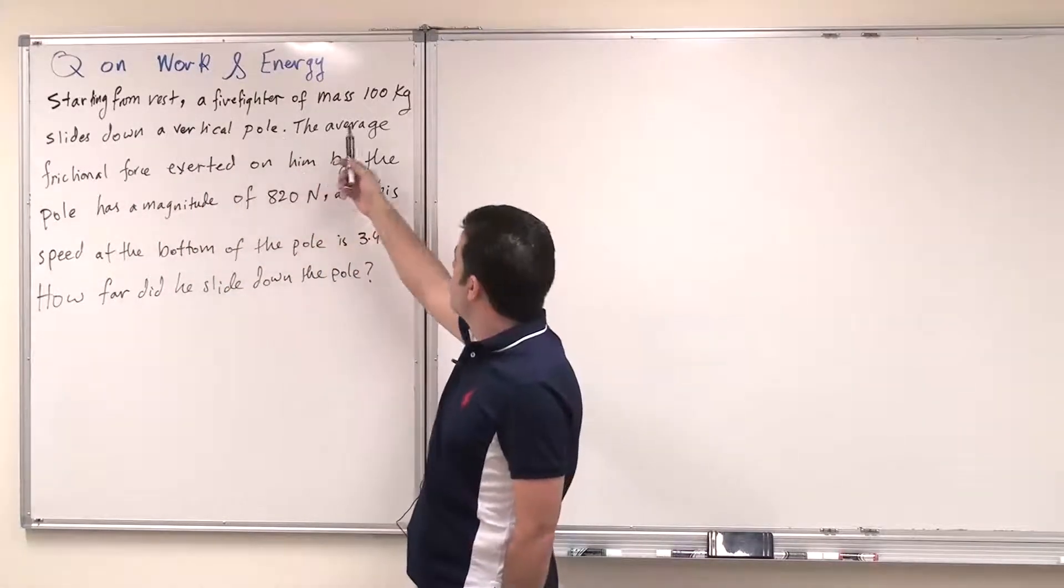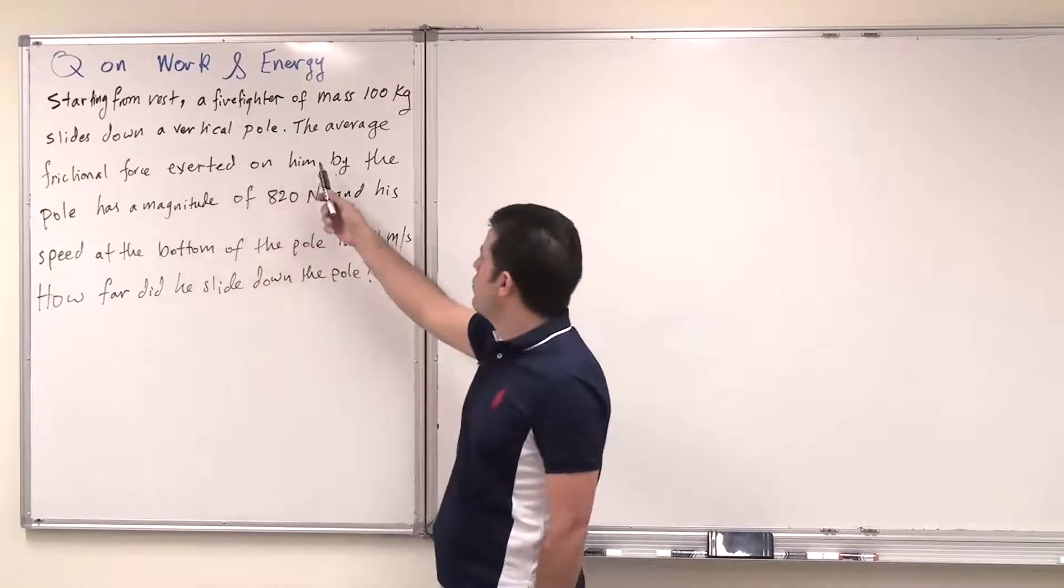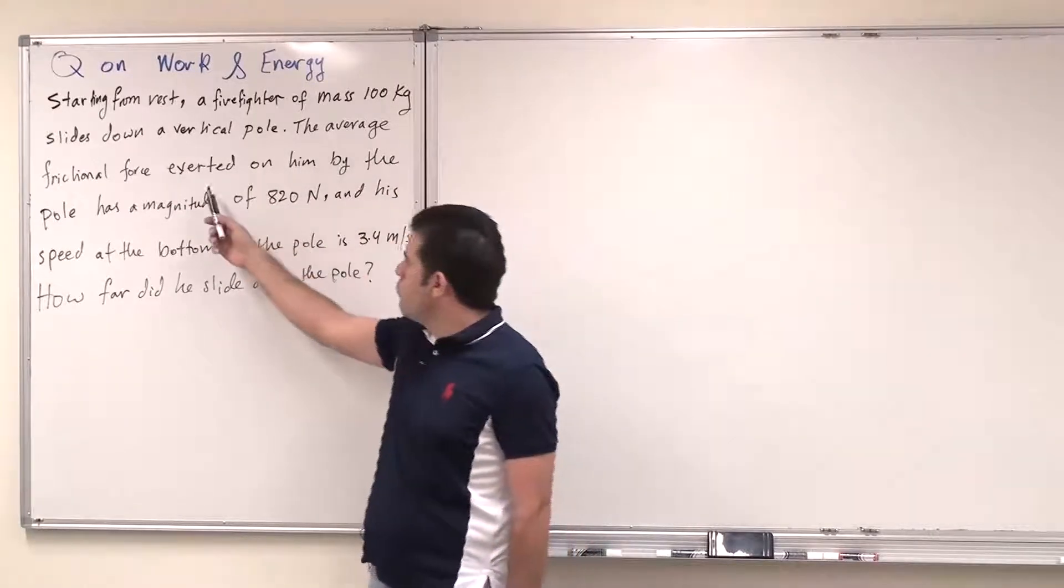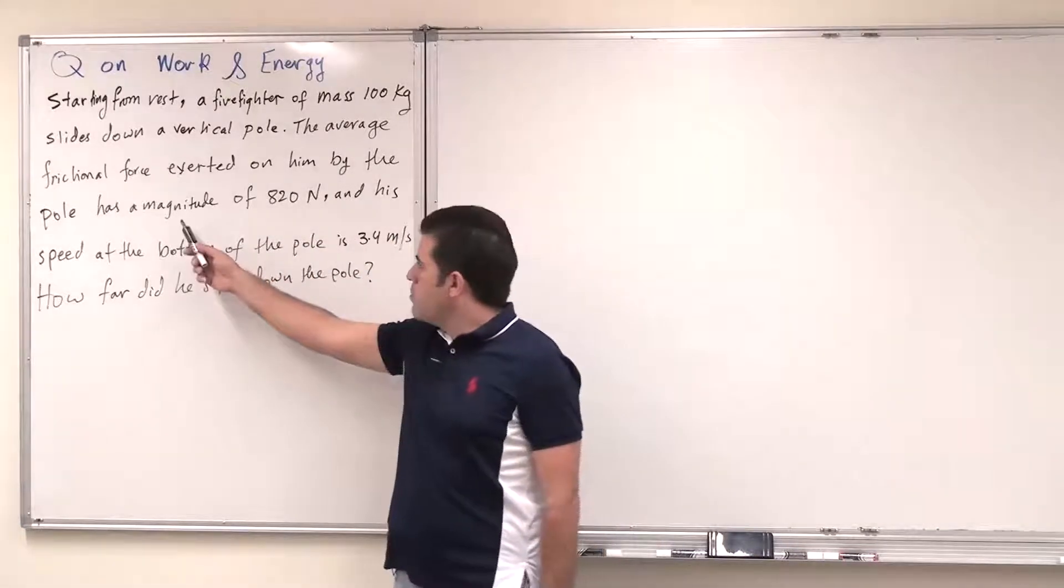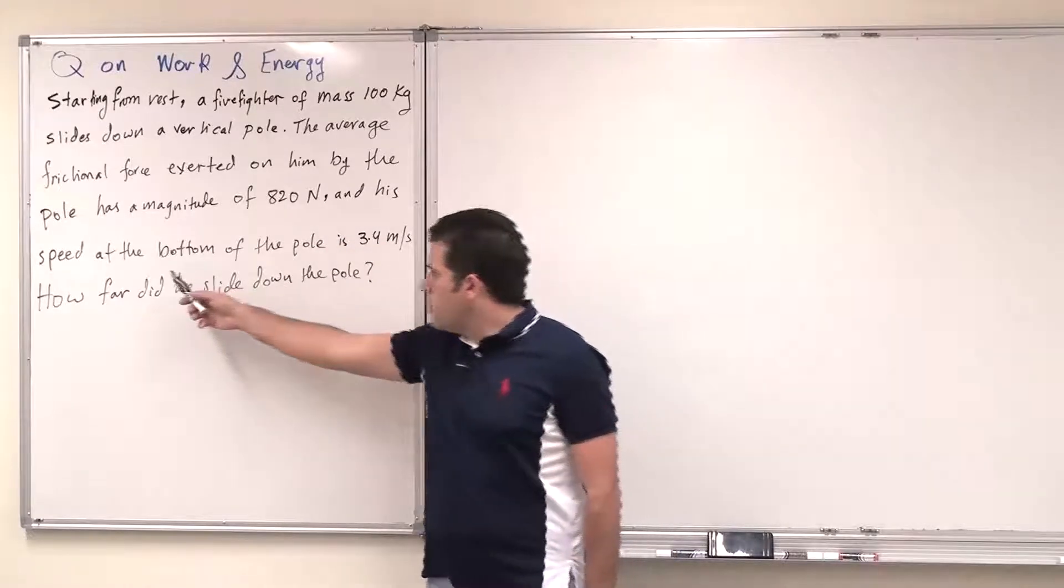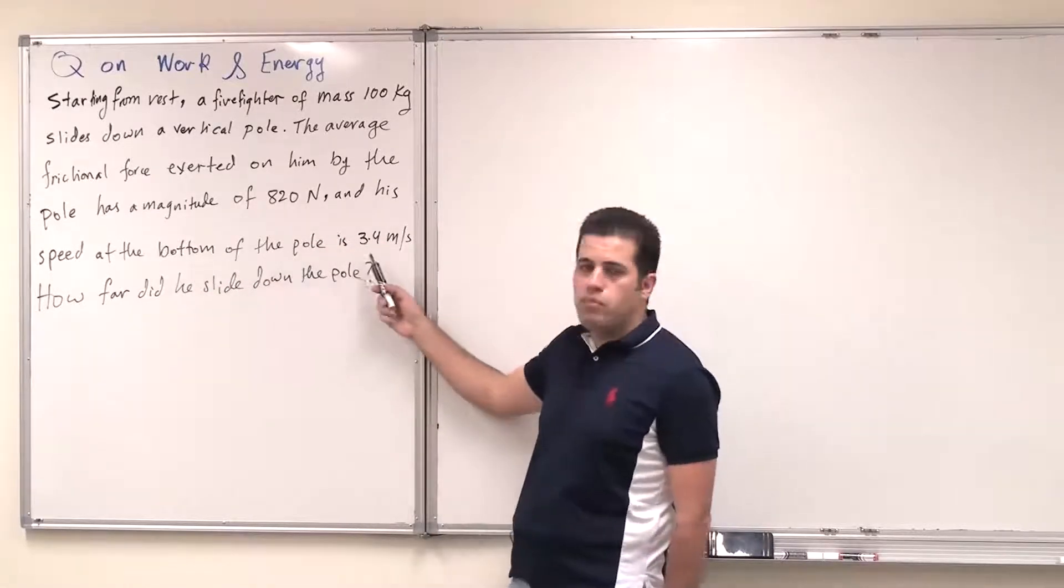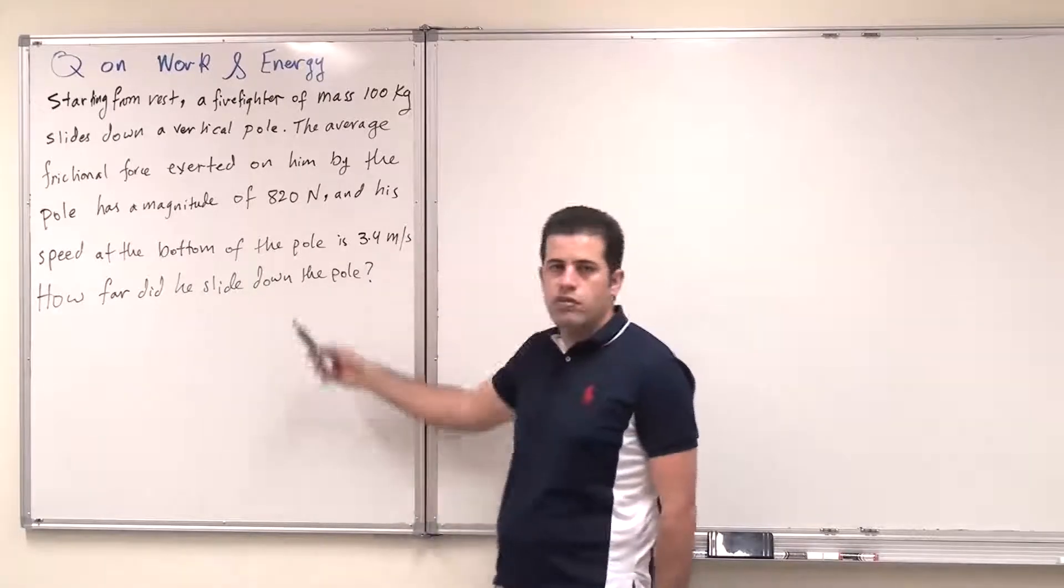a firefighter of mass 100 kg slides down a vertical pole. The average frictional force exerted on him by the pole has a magnitude of 820 newtons, and his speed at the bottom of the pole is 3.4 meters per second. How far did he slide down the pole?